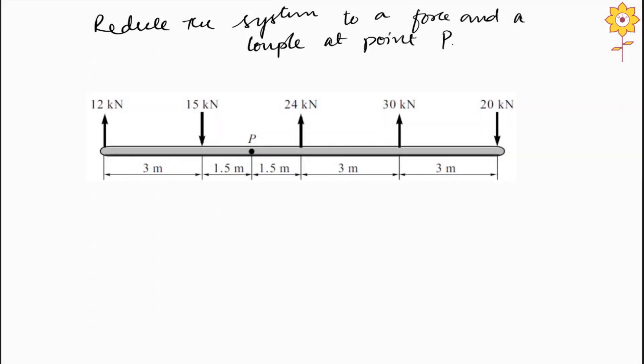Hello everyone, welcome to MES e-learning channel. In this video we will solve another type of problem on a parallel force system. The given condition is you have to reduce the system to a force and a couple at point P, so we have to find a force and a couple at point P.